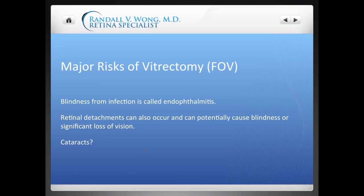The other thing I worry about is whether or not retinal detachments can occur. Retinal detachments can occur in any eye surgery, including vitrectomy and cataract surgery. It can happen because a tear in the retina can occur, and that tear can lead to retinal detachment. By definition, retinal detachments could potentially cause blindness, although they usually don't, or they could cause significant loss of vision — and it would require a separate operation, actually a vitrectomy, to fix. I'll also leave it up to you whether or not you'd call cataracts a complication, but I've listed cataracts as at least a possible risk.